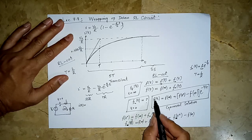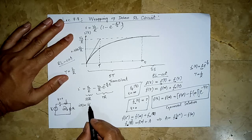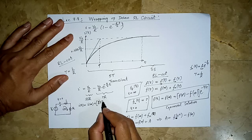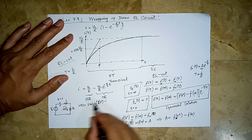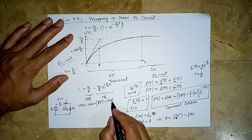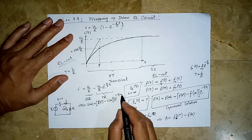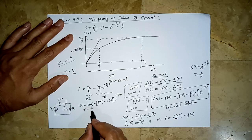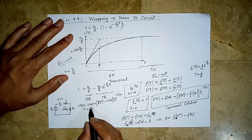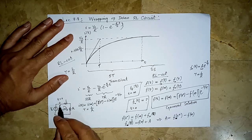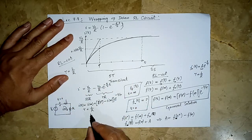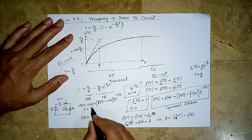Find the value of what you want at infinity, then find its initial value — which is usually given, or sometimes we have to find it from the circuit behavior before switching takes place — and then again the value at infinity. So here at infinity, an inductor behaves as a short circuit. So after the switch has closed and a long time has passed, this becomes short, and we know I(t) at infinity would be V0 over R.